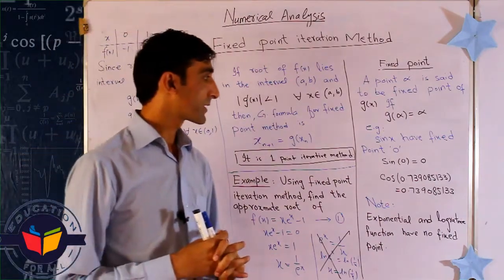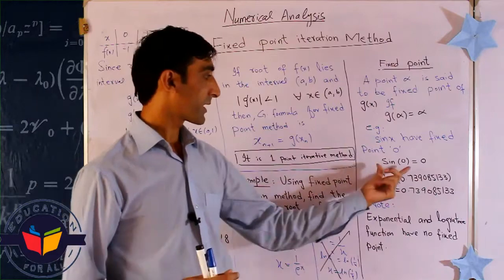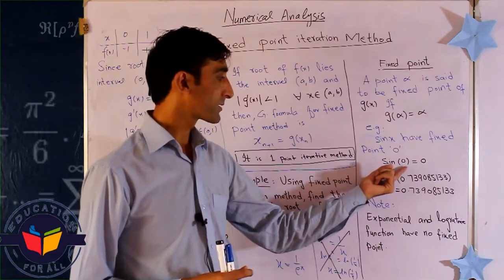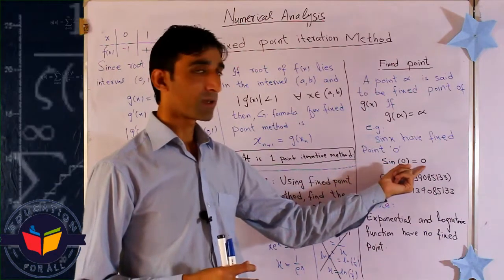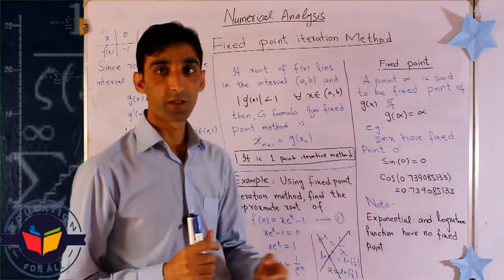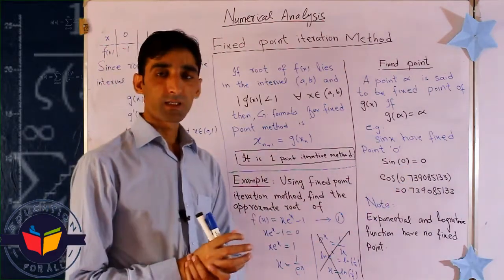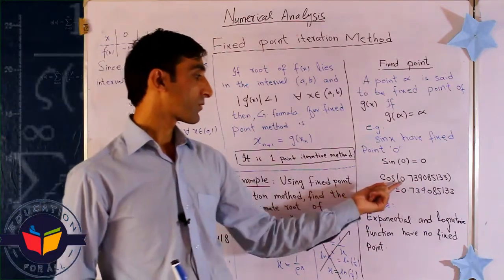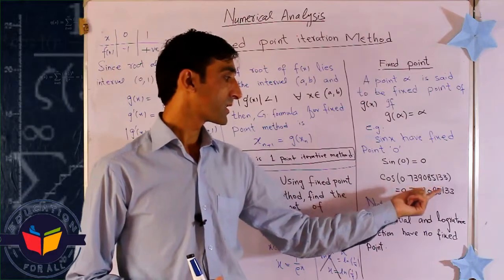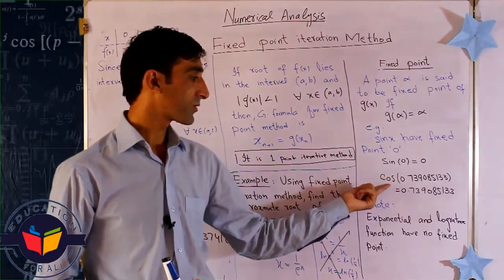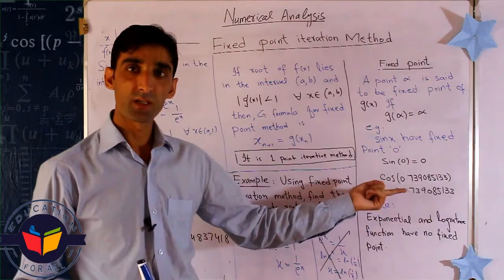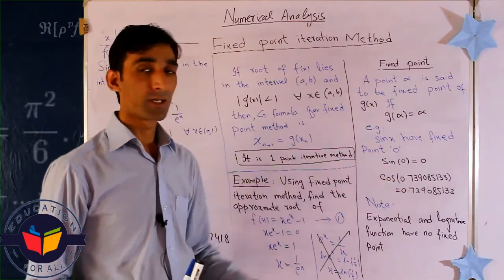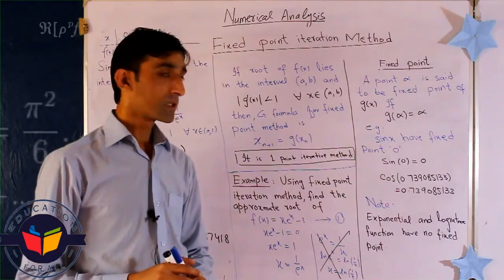You can understand this definition by example. The fixed point value of the sine function is zero, because when we substitute zero we get zero — so zero is the fixed point of the sine function. Similarly, the fixed point of the cosine function is approximately 0.7390851, because substituting this value into the cosine function returns the same value.